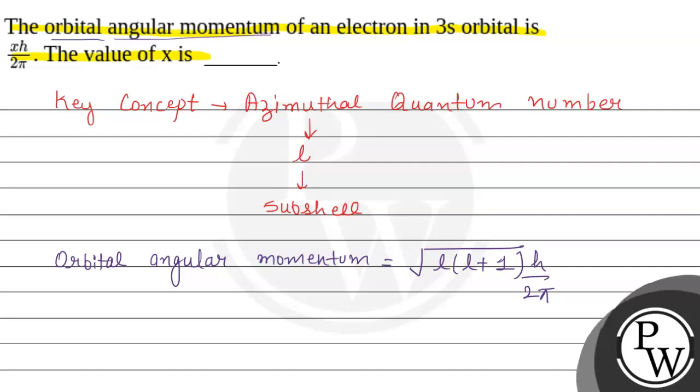Whenever we have to see the l value, if the subshell is s, the value is 0. If it's p, then the value is 1. If d, then the value is 2, and so on. This is how we have l values.